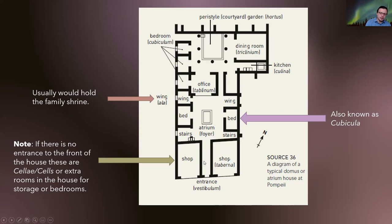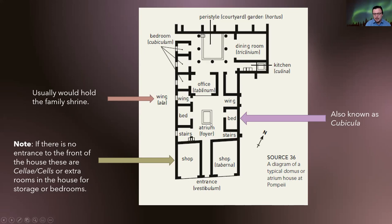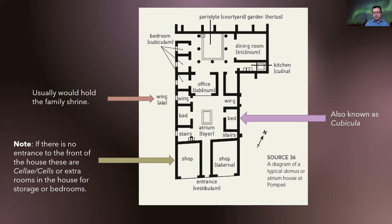Going through the fauces and into the atrium — just this little square space — this is where clients would meet their patrons for the morning salutatio. In the middle is the impluvium, where water drips into the house and feeds their water supply. Right above that is the compluvium: the sloped roof sections that catch rainwater and also provide natural lighting for the house.